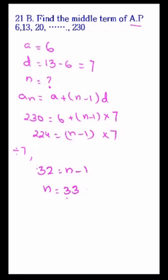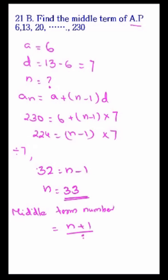N is 33, which is an odd number, so we can find the middle term. The middle term's position is equal to N plus 1 divided by 2, because N is an odd number. That is equal to 17.